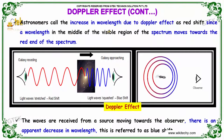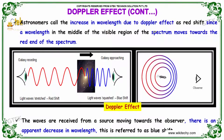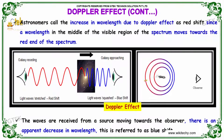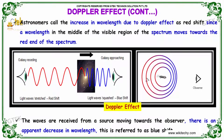Astronomers call the increase in wavelength due to Doppler effect as red shift. You are able to see the wavelength is increased. This is red shift, and the other is blue shift, since the wavelength in the middle of the visible region of the spectrum moves towards the red end of the spectrum.